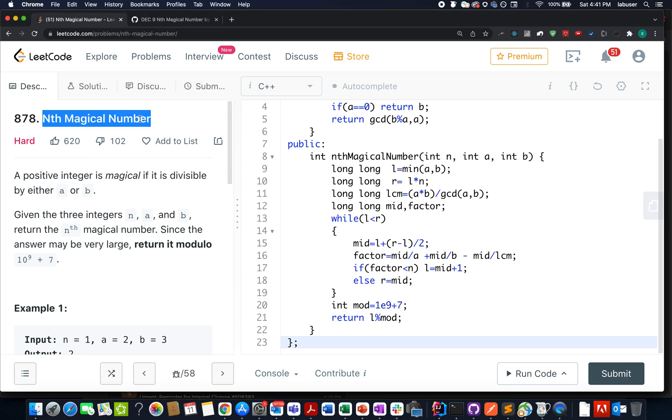Today's question is nth magical number. Here we are given three integers n, a, and b. We need to identify the nth magical number in the given sequence. A number is said to be a magical number if it is divisible either by a or b or both. So we need to generate that series in ascending order and tell the nth element in that series.